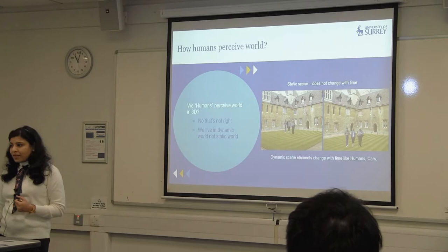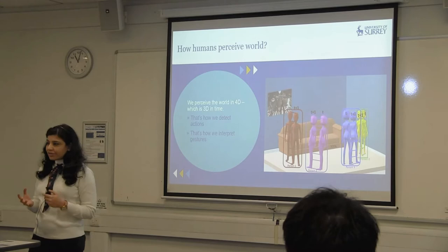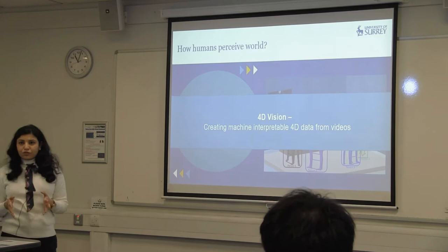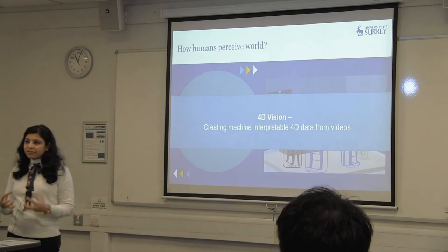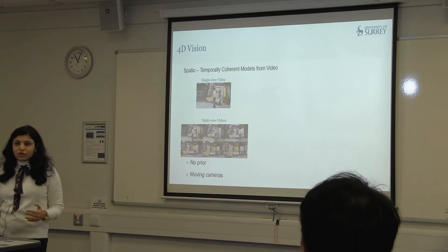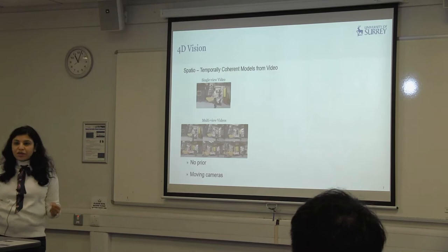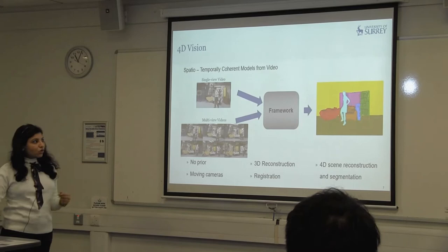We live in a dynamic world, not a static world. Static scenes are something which does not change with time, and dynamic scene elements change with time, like humans and cars. So we perceive the world in 4D, which is 3D in time. That's how we detect actions, that's how we interpret gestures. 4D vision enables creating machine-interpretable 4D data from videos, enabling machines to understand the world like humans do. This is an overall framework of 4D vision — the input is single-view or multi-view video captured by moving or static cameras, and the idea is to get 3D reconstruction and track it in time to get the final 4D scene reconstruction and segmentation.